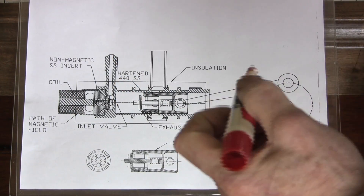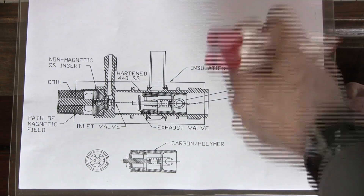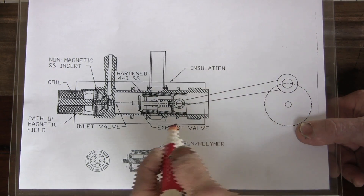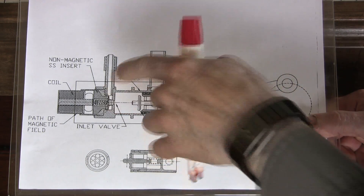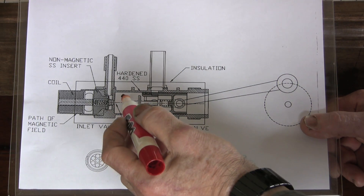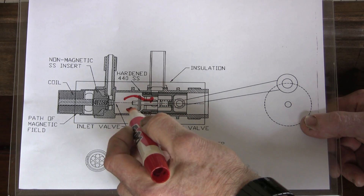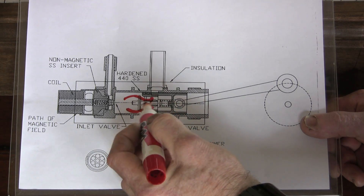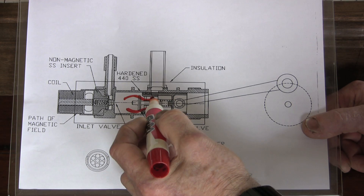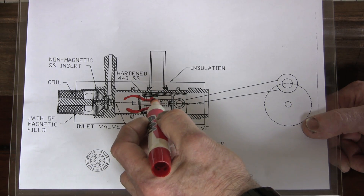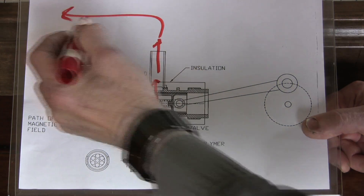To better understand the operation, this is a cross section of the engine. Let's start with the exhaust cycle. Imagine the piston is moving this way — the piston valve is open, so the steam gets around the piston valve. There are some elongated ports here in the piston valve which connect to the ports in the cylinder, so the steam comes out of here and goes to the condenser.